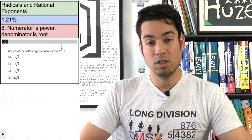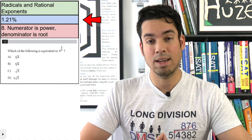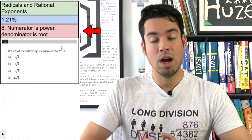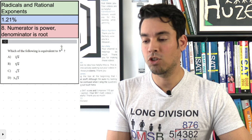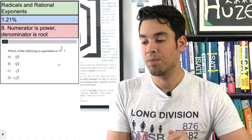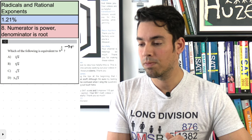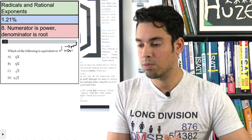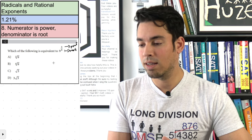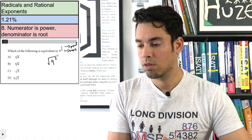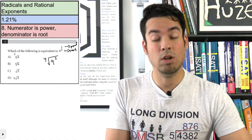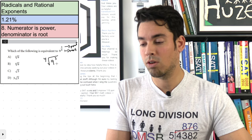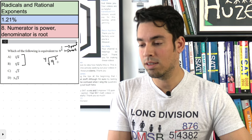Next are radicals and rational exponents, making up 1.21% of the test. The strategy: numerator is the power, denominator is the root. You'll often need to convert between rational exponent and radical format. So 9^(3/4) means 9 to the third power under the fourth root. That answer doesn't appear directly in the choices, so we need to rewrite using base 3.